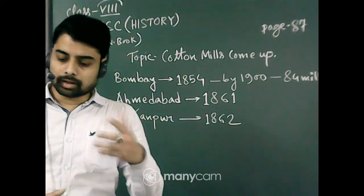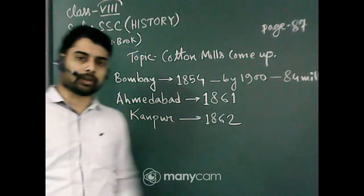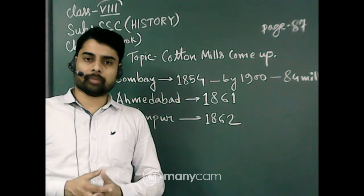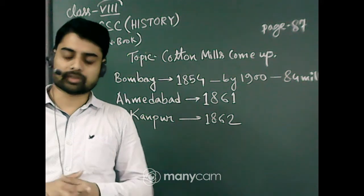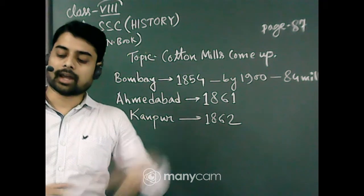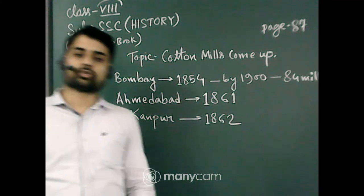The first mill also started in Ahmedabad in 1861, very near to Bombay in Gujarat. The very next year in 1862, the first cotton mill was established in Kanpur, Uttar Pradesh, at the time known as United Provinces.